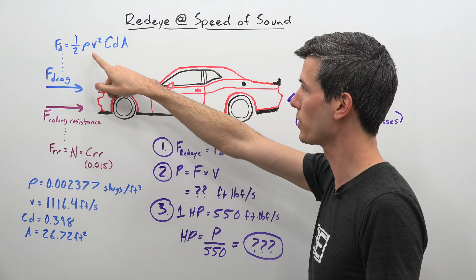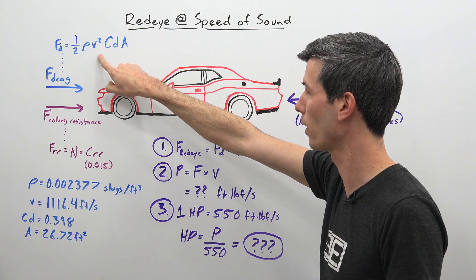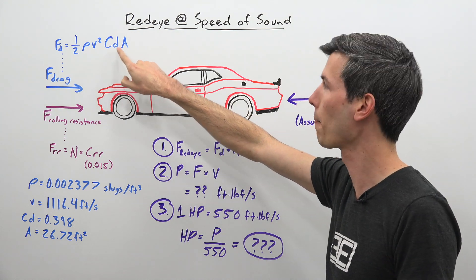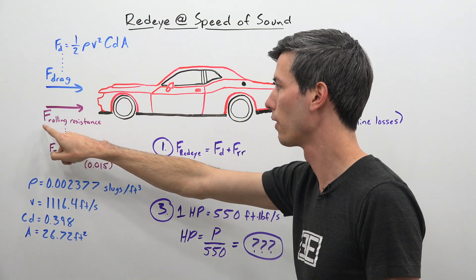These two forces being the force of drag, which is equal to one-half air density multiplied by your velocity squared, multiplied by your drag coefficient, multiplied by your frontal area, all of which Dodge provides.